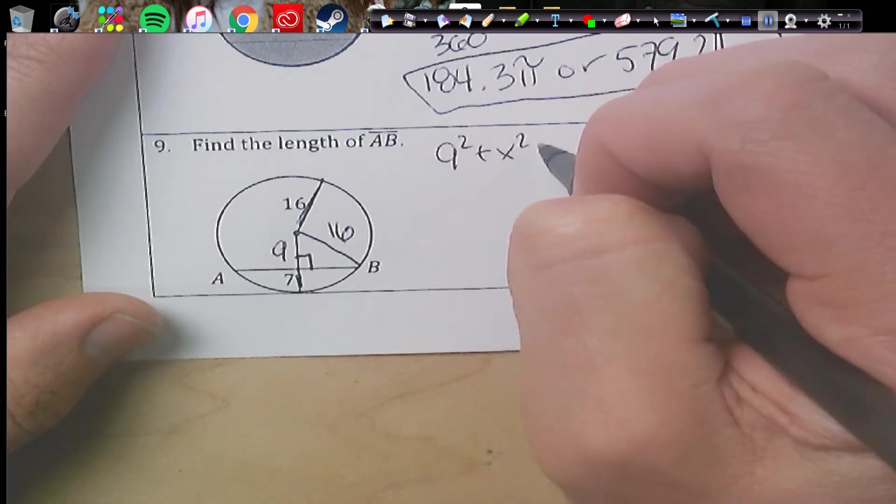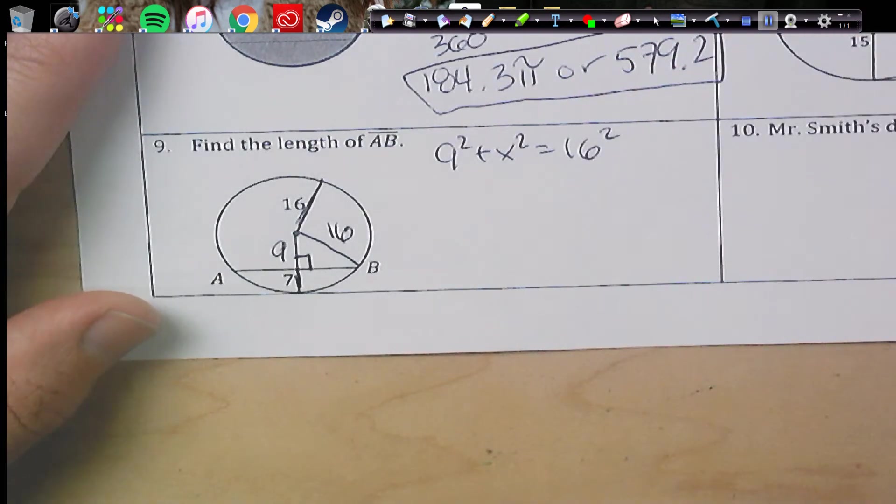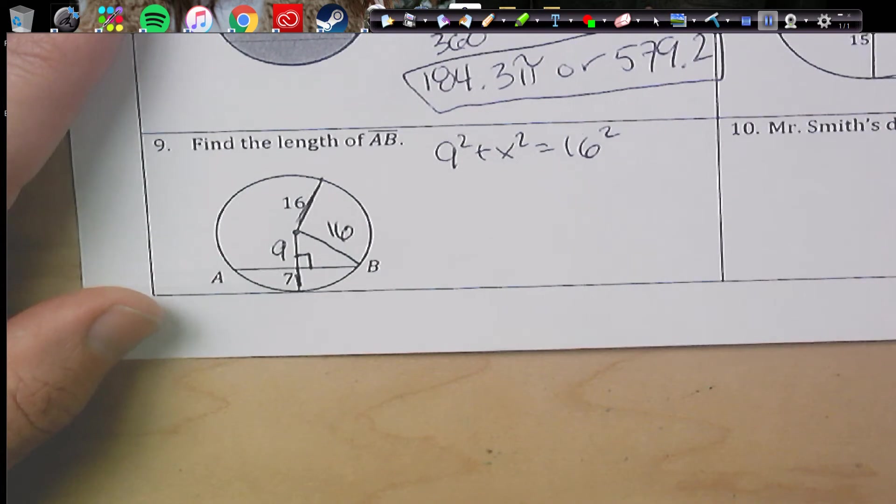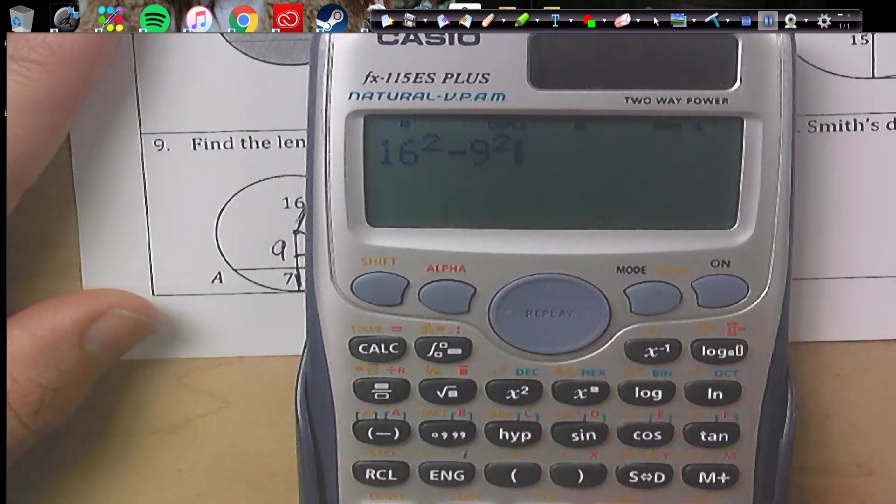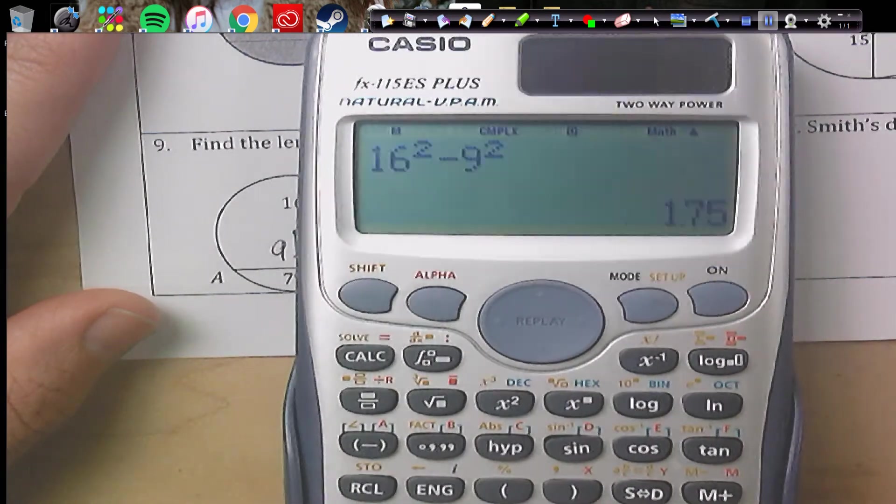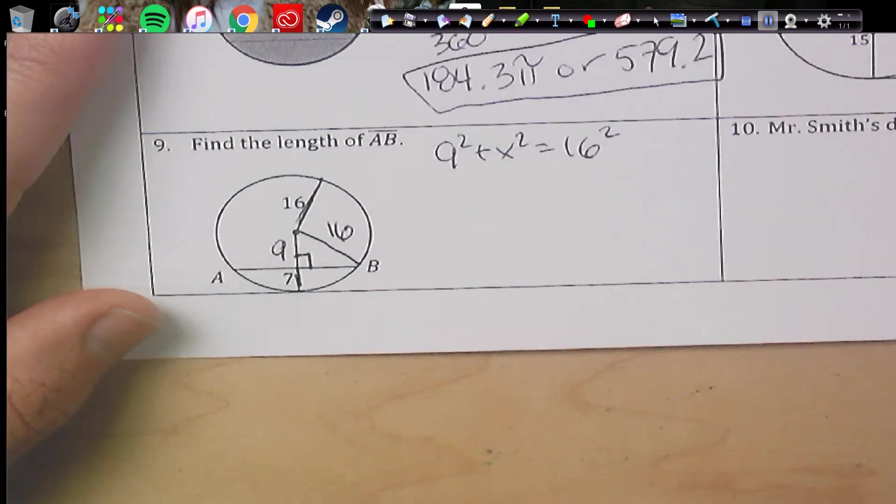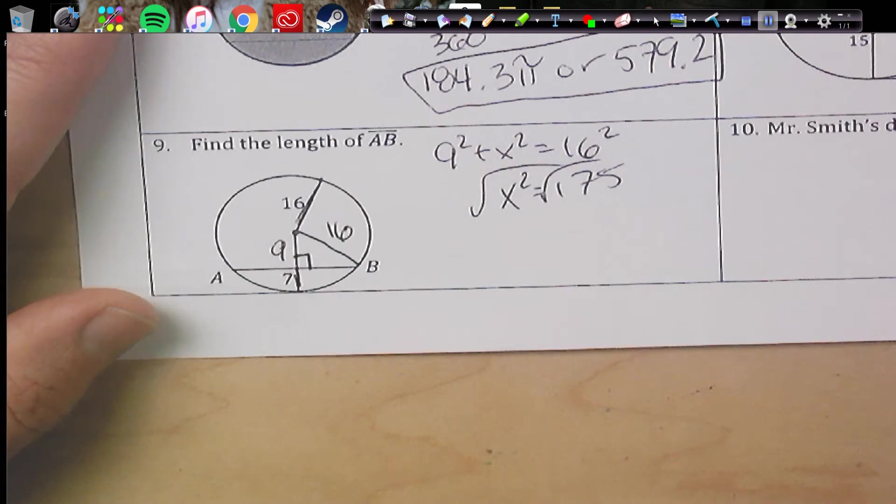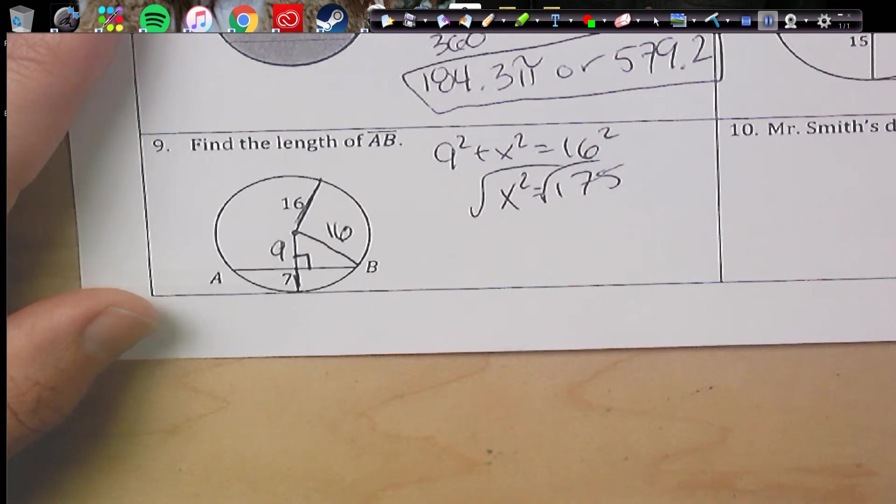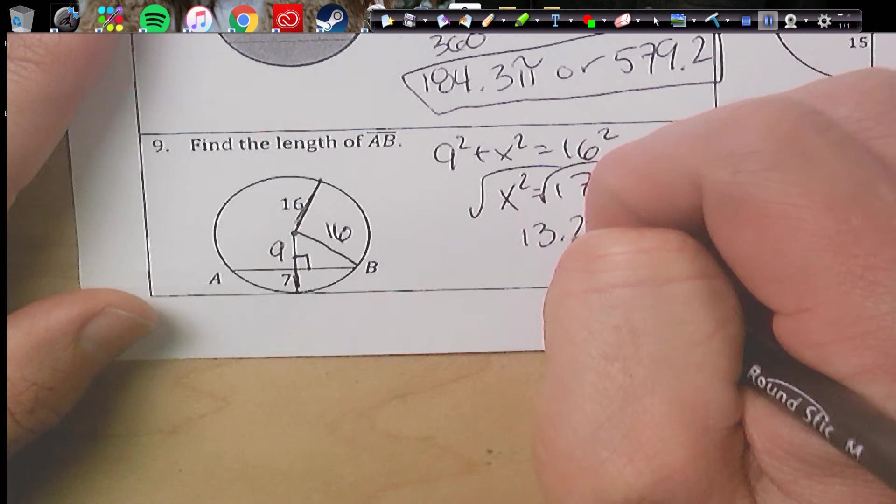9 squared plus x squared equals 16 squared. So I'm going to do that in my calculator. And I just go straight to subtracting the 9 squared from the 16 squared and hitting go. And that gives me 175. So x squared equals 175. Take the square root. And we get 13.2.